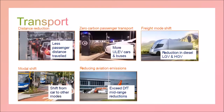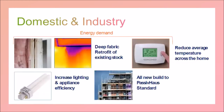Looking at transport, the model proposes reducing passenger distance per person by 25%, but also a modal shift. At the moment 74% of passenger miles are done in a car, van or motorbike, whereas the model proposes reducing that to 38%. Together these are really significant changes in behaviour.